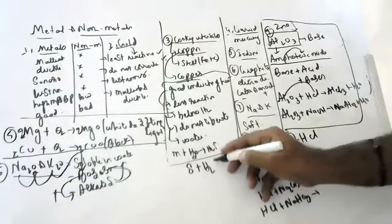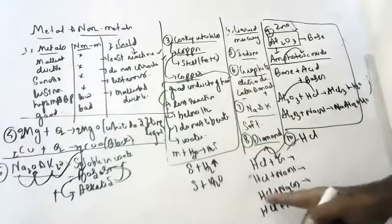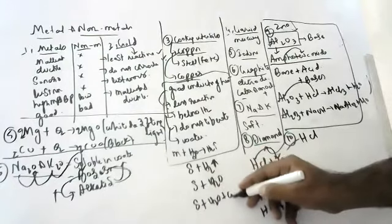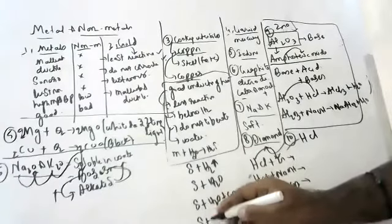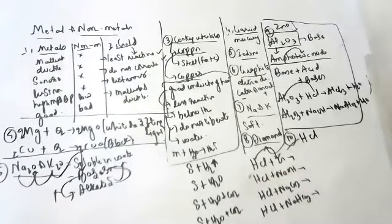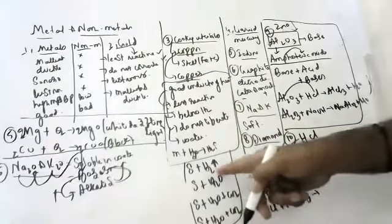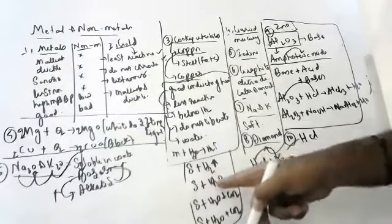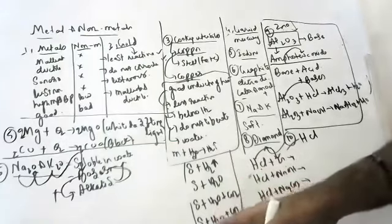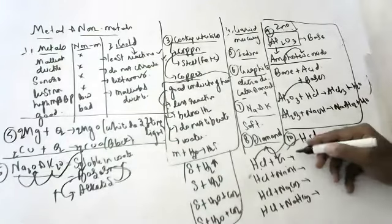Remember these rules: acid with metal gives salt plus hydrogen gas; acid with base gives salt plus water; acid with carbonate gives salt plus water plus CO2; acid with bicarbonate gives salt plus water plus CO2. So for HCl with zinc: ZnCl2 + H2 gas. HCl with NaOH: NaCl + H2O. HCl with Na2CO3 and NaHCO3: salt + water + CO2. These rules are very useful for class-level questions.